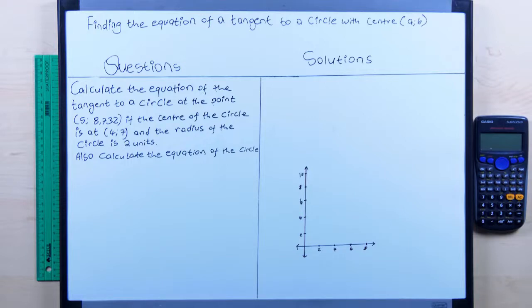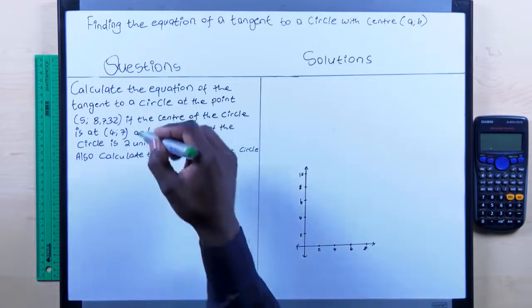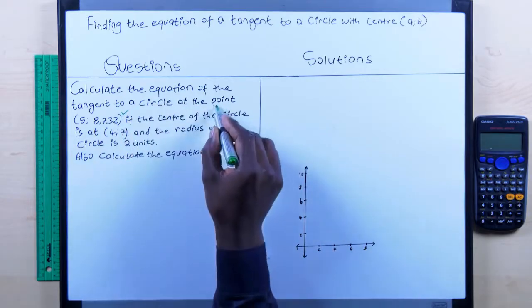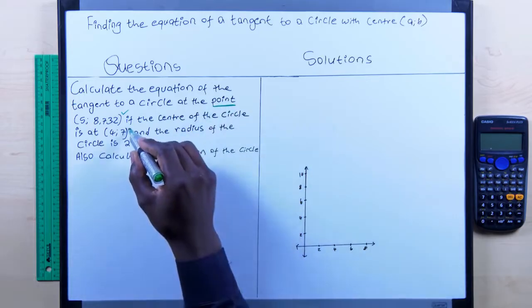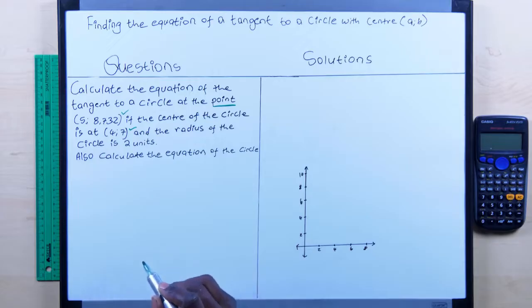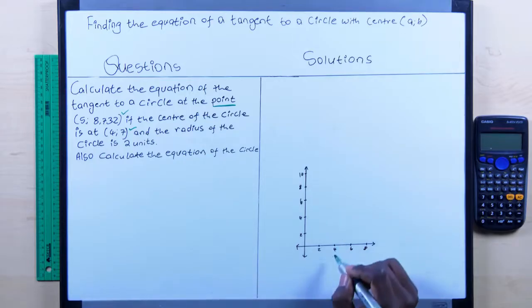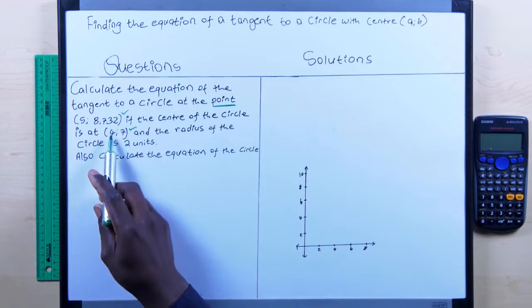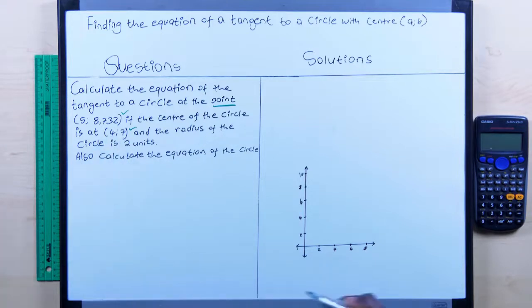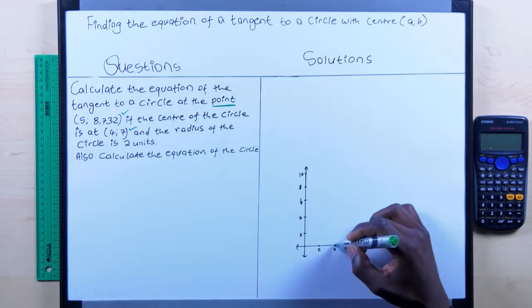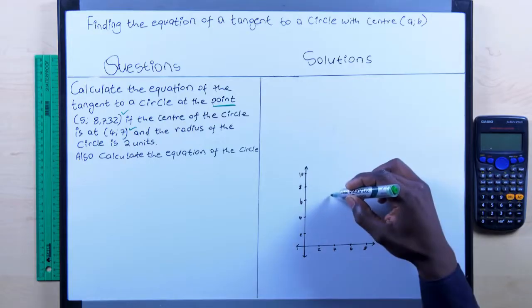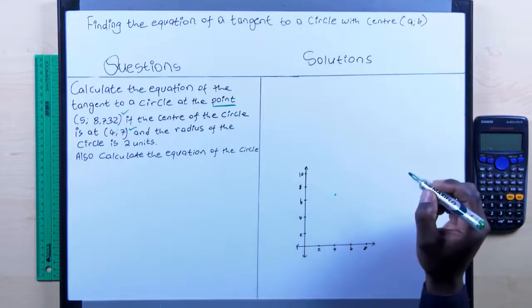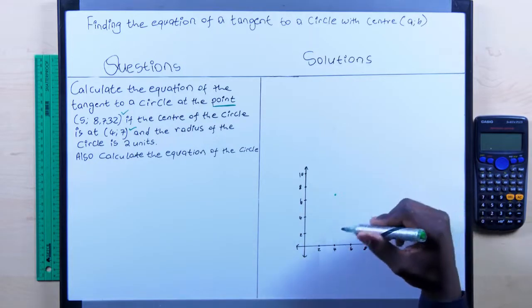Note the important points: (5, 8.732) is a point on the circle, and (4, 7) is the center of the circle. On the graph, the center is at x = 4, y = 7, and the radius equals 2 units.